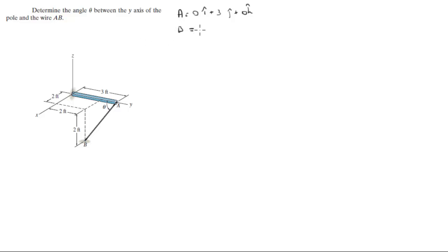And for B is equal to 2i plus 2j minus 2k.